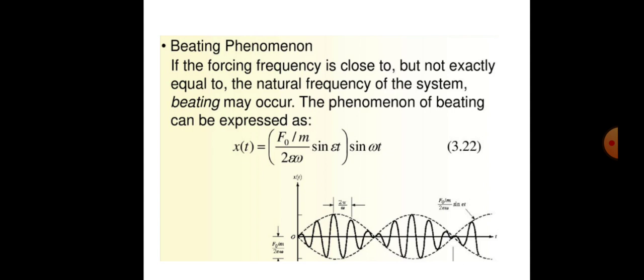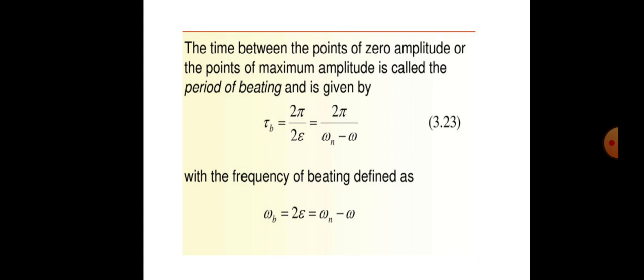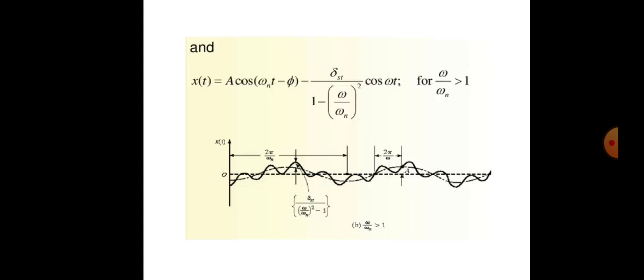The expression (F₀/m) sin(ωt) or sin(εt) describes the amplitude in this case. The time between points of zero amplitude or maximum amplitude is called the period of beating, given by T_b = 2π / (2ε) = 2π / (ωₙ − ω). The frequency of beating is ω_b = 2ε = ωₙ − ω. This is all about harmonic excitations, where coinciding amplitudes cause varying resultant amplitude.